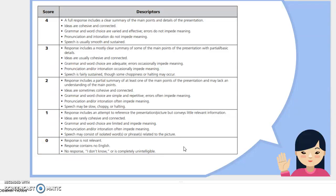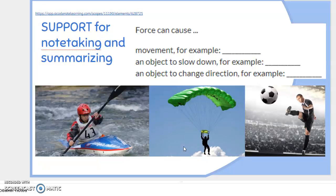Here is the rubric — scored from zero to four. A zero is no response, and a four is a full response that includes main points, good grammar, good pronunciation, and speech that is smooth and sustained.